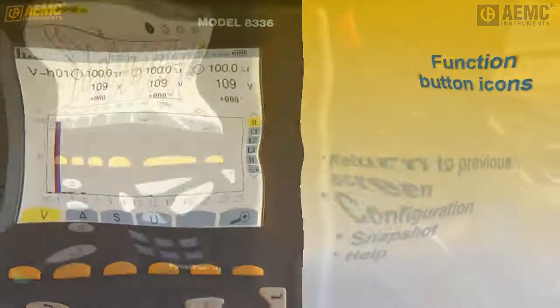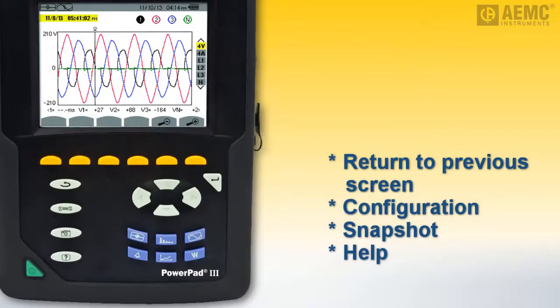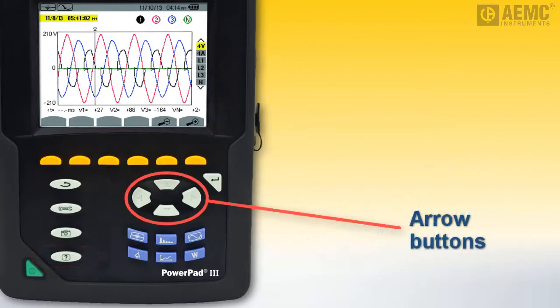Below the function keys are three additional sets of buttons. On the left is a column of buttons that, top to bottom, return to the previous screen, display the configuration options menu, take and display snapshots, and display context-sensitive help. To the right is the arrows keypad. Use these in conjunction with the enter button to navigate, highlight, select, edit, and save options and parameters.